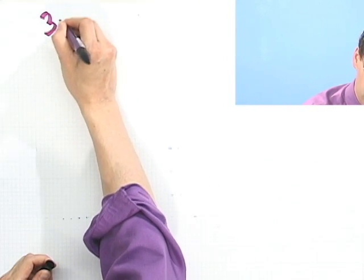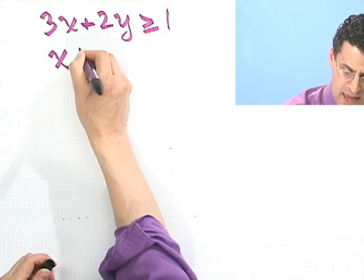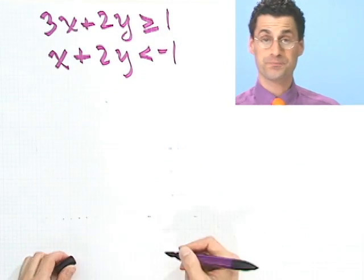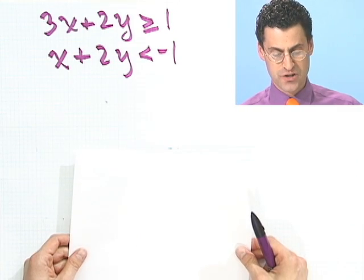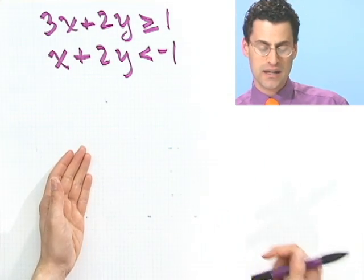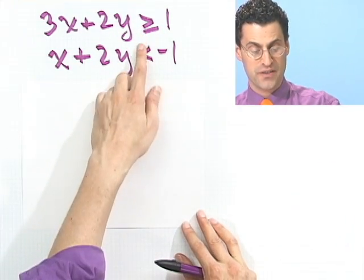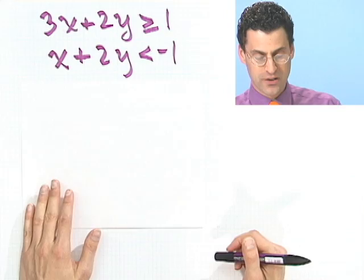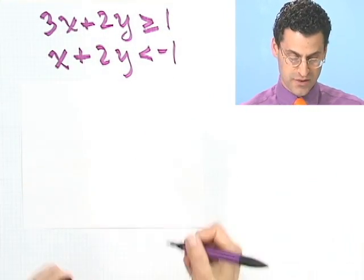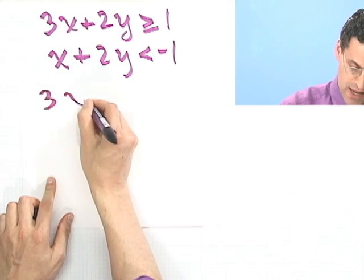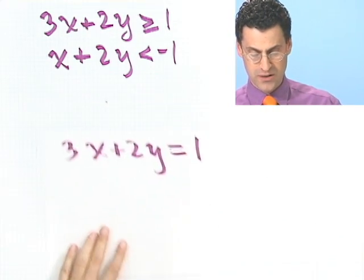How about this system: 3x plus 2y greater than or equal to 1, and x plus 2y less than negative 1. The first thing I would do is look at these as equations. You could write them in point-slope form or use them in standard form as they are. Let me show you a slick way of graphing these without solving for anything. The auxiliary equation for the first one is 3x plus 2y equals 1.